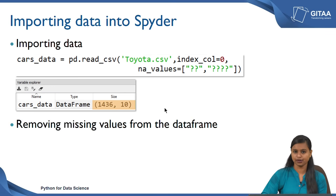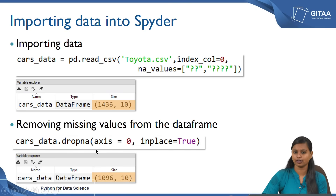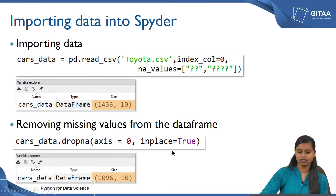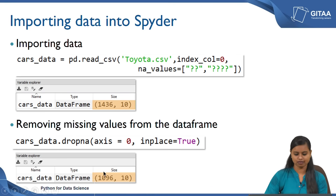We are going to remove all the missing values from the data frame before visualization. To drop all records where there are missing values, we use the dropna command preceded by the data frame name. Setting axis equal to 0 removes all rows with missing values. Setting inplace equal to true means the modifications are reflected directly in the data frame without needing to assign it to a new variable. After removing missing values, the data frame has 1096 observations with 10 columns, so we have left out around 400 observations.